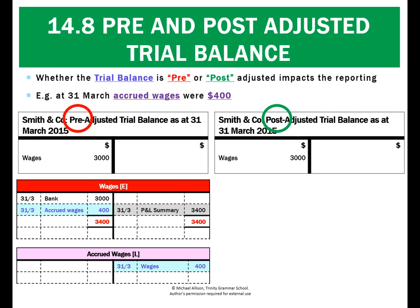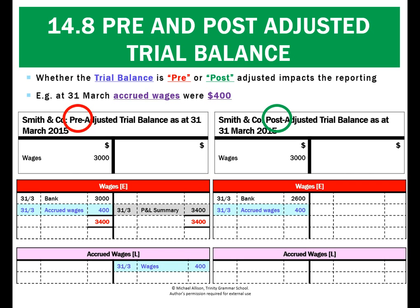Looking at the trial balance on the right, though, wages are $3,000 but it's already been adjusted. So that $3,000 must include the accrued wages, which have already been recorded. What we've got here is a slight difference — we can see total wages expense of $400, we've still got an accrued wages liability, and then we shut it down to the profit and loss summary. But the main difference is in the totals.